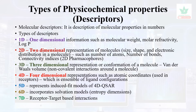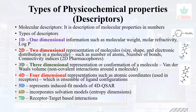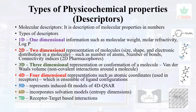Seven-dimensional descriptors involve the receptor and target interaction. So, summarizing: 1D, 2D, 3D, 4D, then 5D, 6D — and at 7D the receptor will interact with the ligand. These all are descriptors that we study in QSAR.